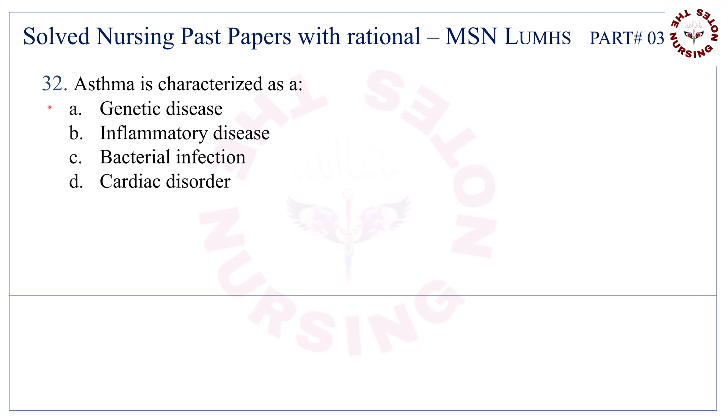Question number 32. Asthma is characterized as — the correct answer is B — inflammatory disease.